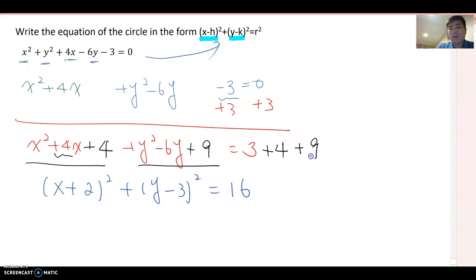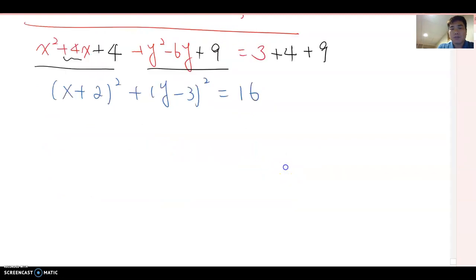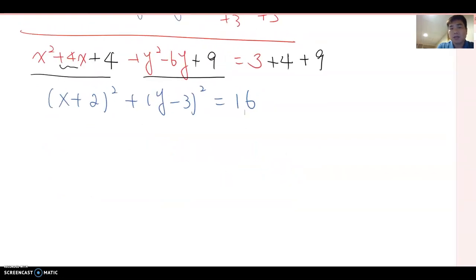And now from here, it's really easy. So you can find center. How to find it? Take opposite of those numbers, which is (-2, 3). And the radius is √16, which means 4. That's the answer for this problem.